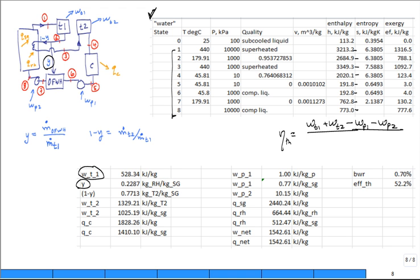And then we have divided by the Q in, that would be Q of the steam generator, plus Q of the reheat, true?